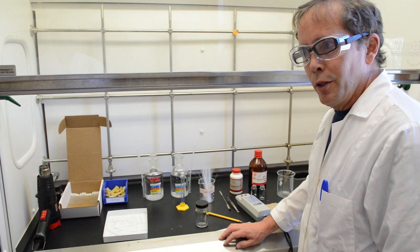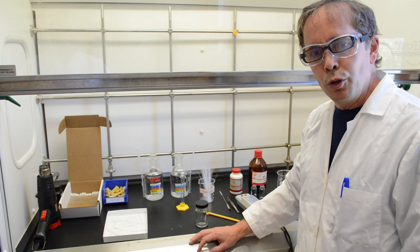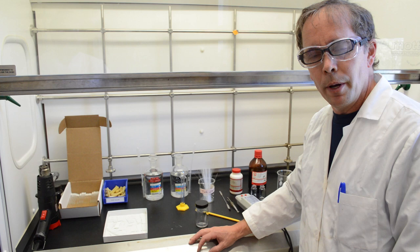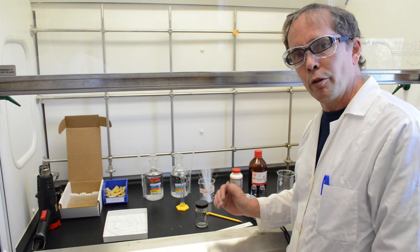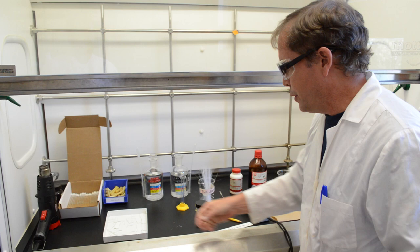Today's video is on thin layer chromatography. Thin layer chromatography is a very useful technique. It can be used to identify a compound in a mixture, to assess the purity of a compound, and most importantly it is used to monitor or follow the progress of a reaction from starting materials to products.